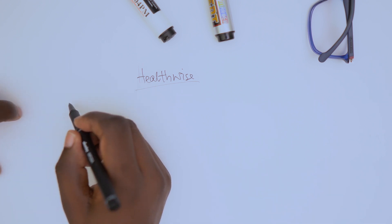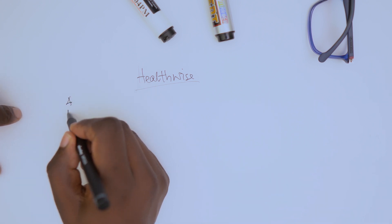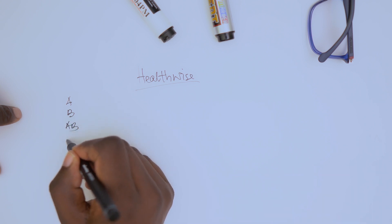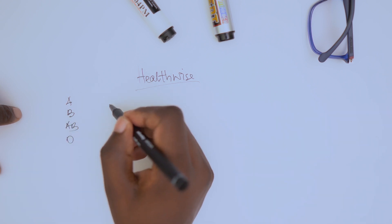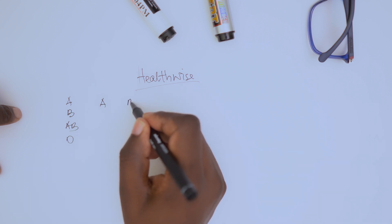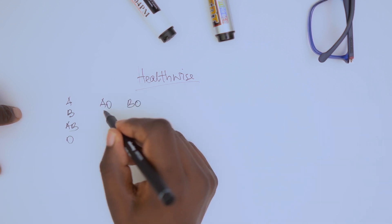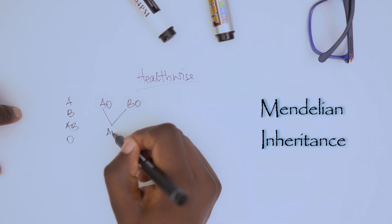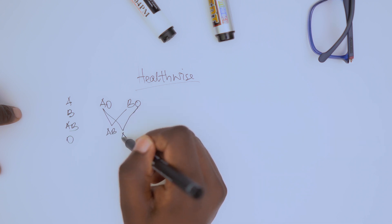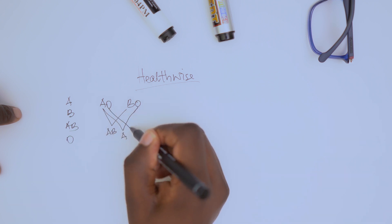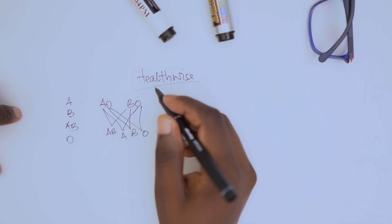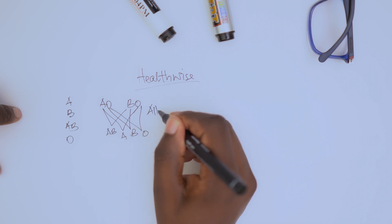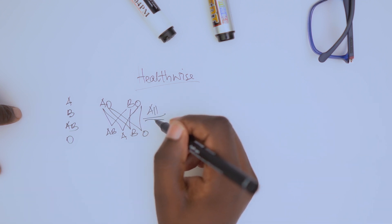As you all know, we have four blood groups — the major ones: A, B, AB, and O. If one partner has A and the other partner is B, in Mendelian fashion you're going to get AB, A, B, and O in that family. So the probability of having all four blood groups is extremely high, meaning you cannot use this method to determine whether the kid is yours or not.